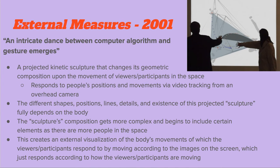Next is her External Measures piece from 2001, which is described as an intricate dance between computer algorithm and gesture. It's a projected kinetic sculpture that changes its geometric composition upon the movement of viewers and participants in the space. It responds to people's positions and movements via video tracking from an overhead camera. The different shapes, positions, lines, and details of this projected sculpture fully depend on the body. The sculpture's composition gets more complex and begins to include certain elements as there are more people in the space.